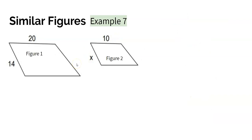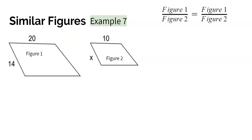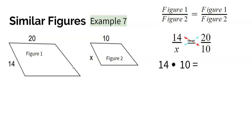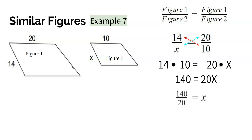Last example, example 7: another parallelogram with figure 1 and figure 2. We compare matching sides: 14 over x equals 20 over 10. Multiplying diagonally: 14 times 10 equals 20 times x, giving 140 equals 20x. Dividing both sides by 20, x is equal to 7. So this is the activity you'll be doing today.